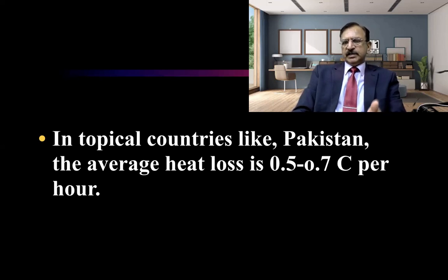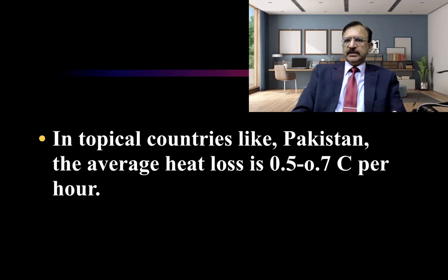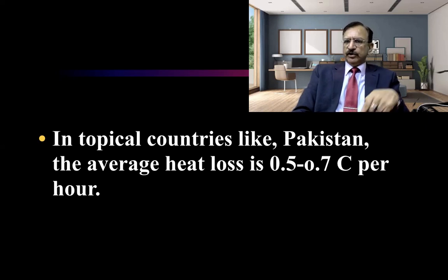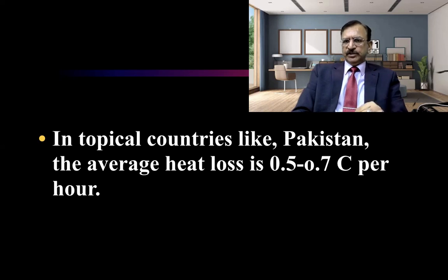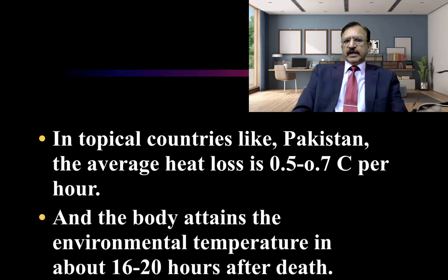In certain circumstances we do not take the rectal temperature — for example, if there is a history of sexual assault, the perineum is not disturbed, so we do not take the rectal or vaginal temperature. Instead we take the sub-hepatic temperature, with an incision in the right hypochondrium and inserting the thanometer. The thanometer is a thermometer devised from 0 to 50 degrees Celsius to calculate temperature after death. The body normally attains environmental temperature in 16 to 20 hours after death.